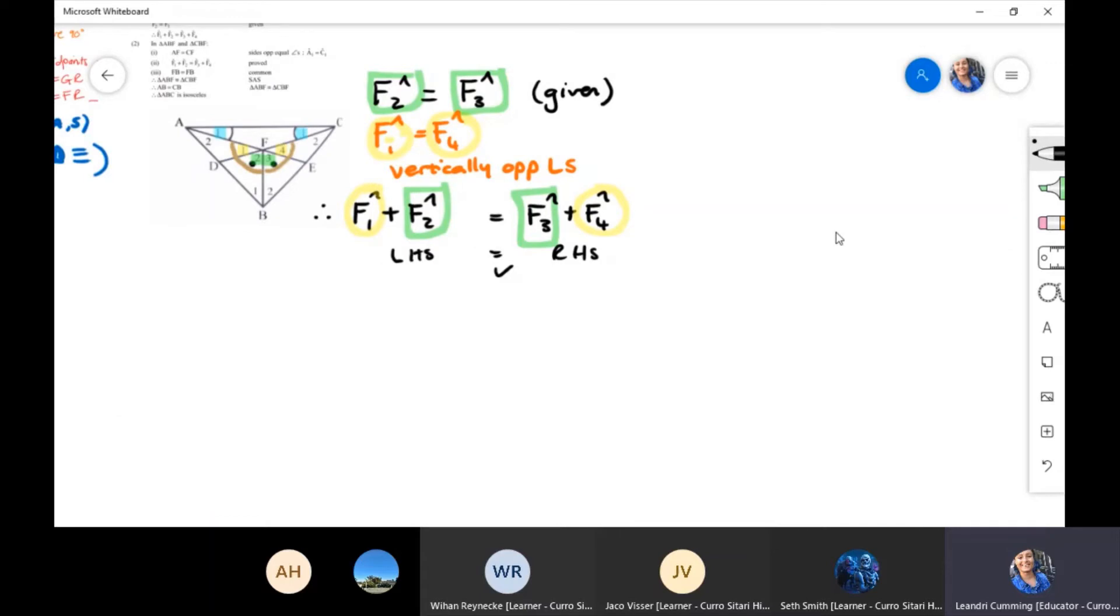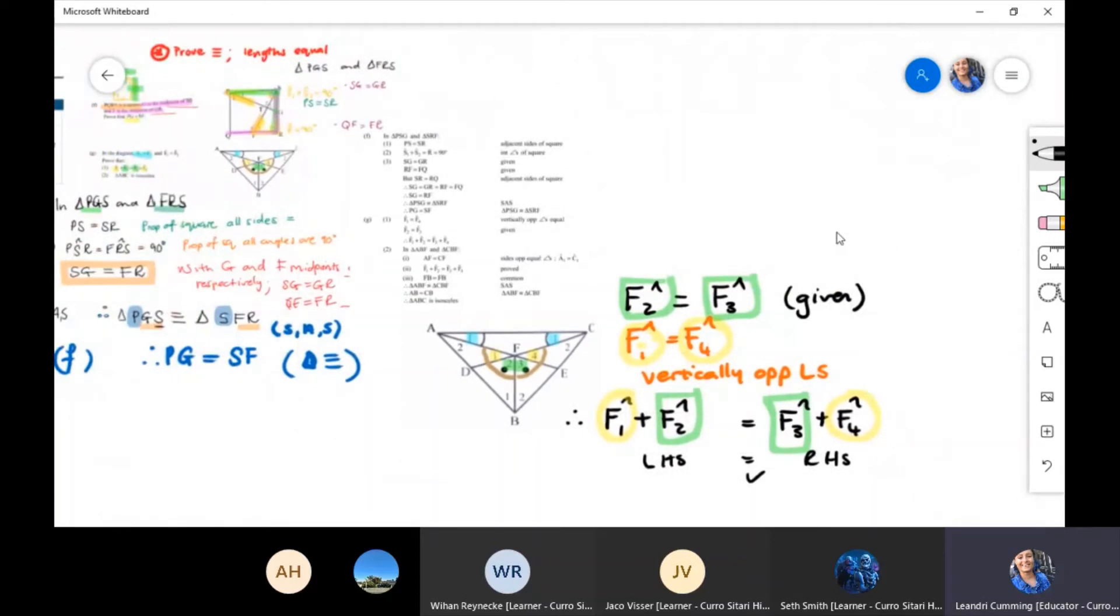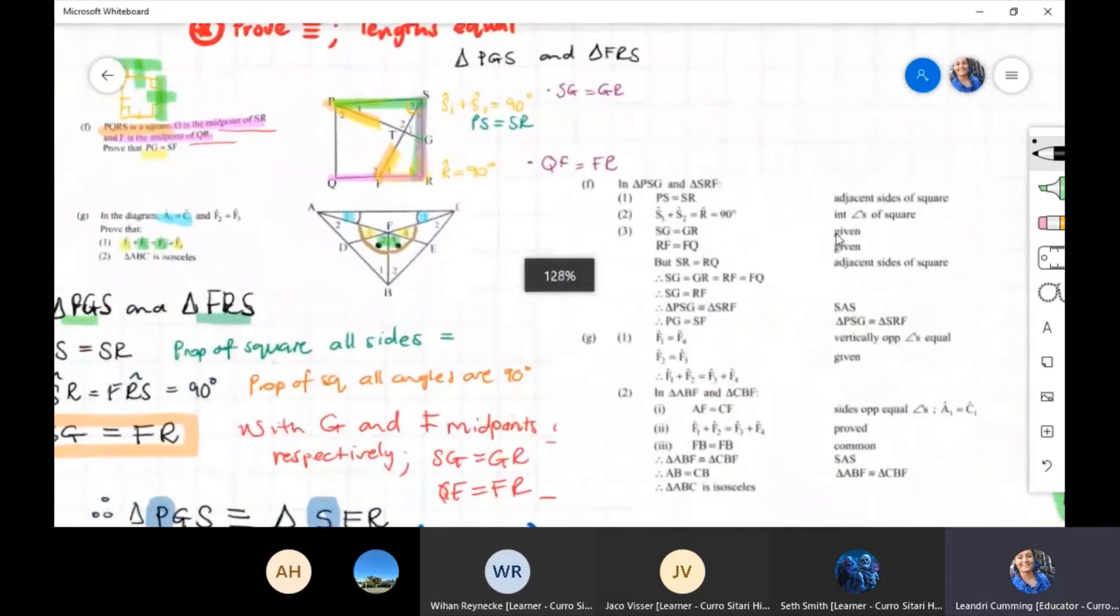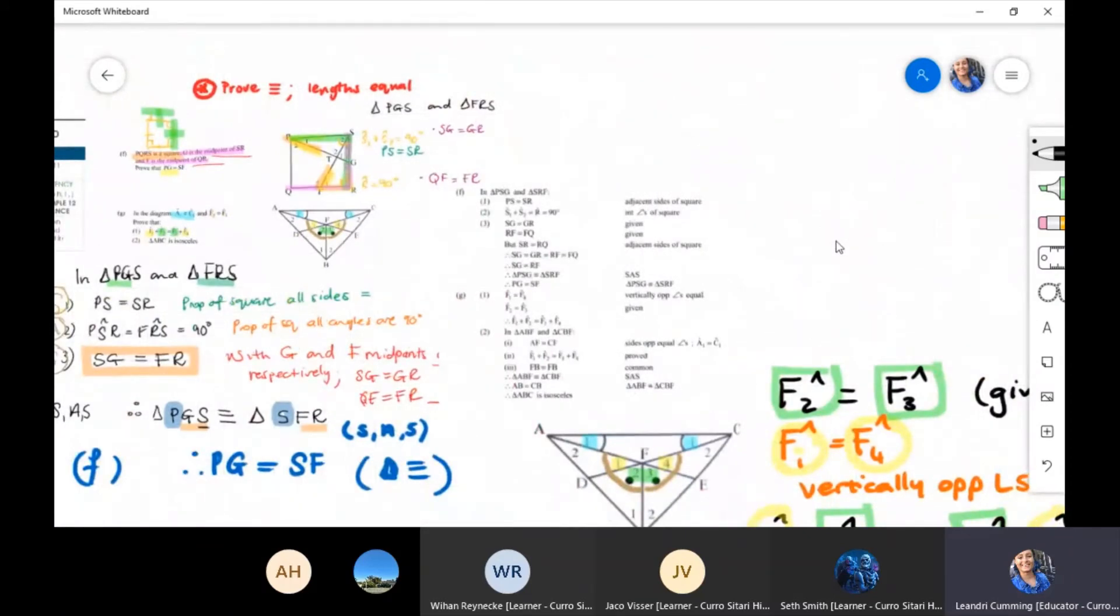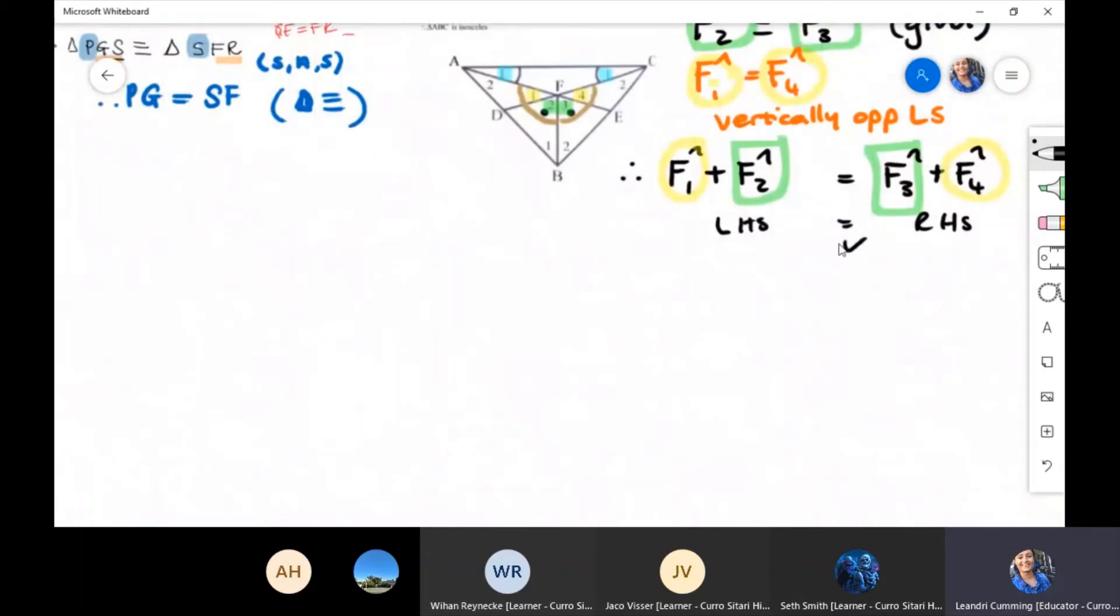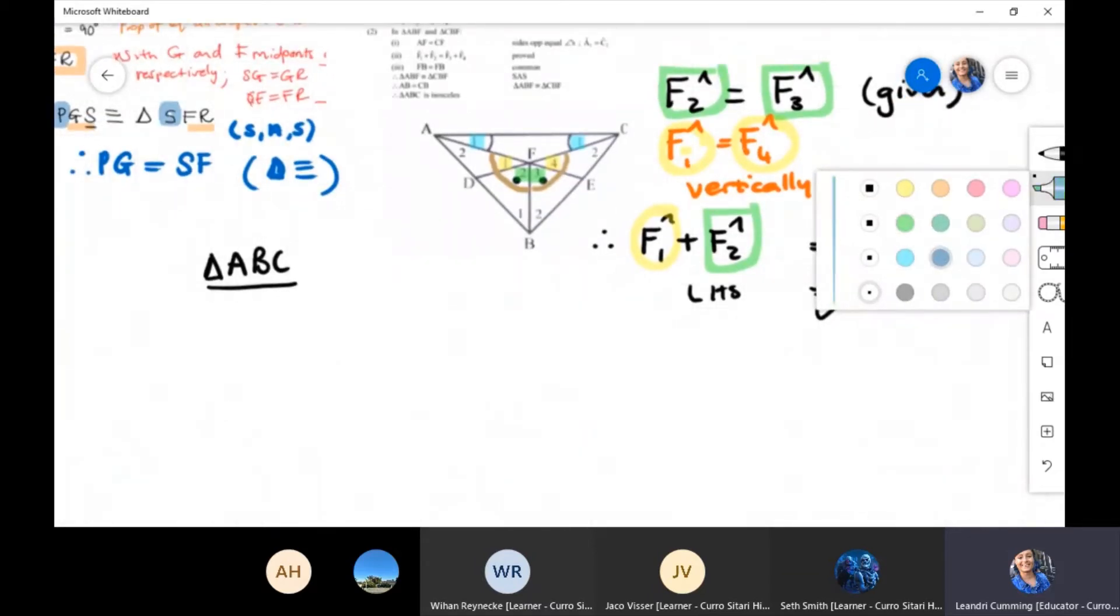Now the next one, let's see what we get. The next question asks that we need to prove triangle ABC is isosceles. Triangle ABC. Let's find triangle ABC first. That is our big triangle. So if we want to prove triangle ABC is isosceles, we need to prove that certain sides are equal.